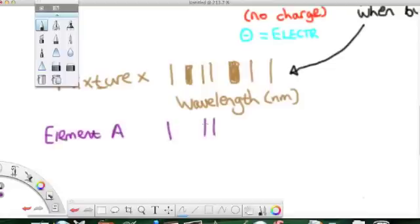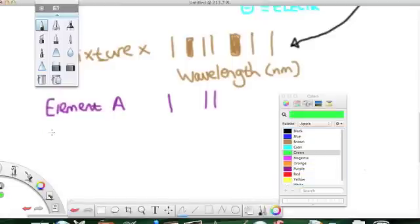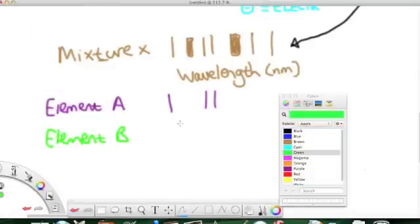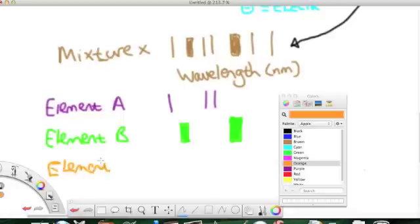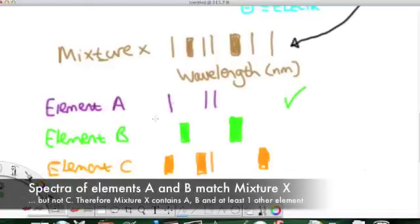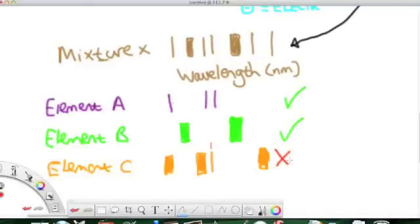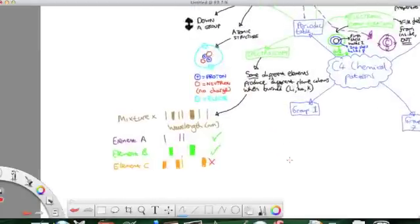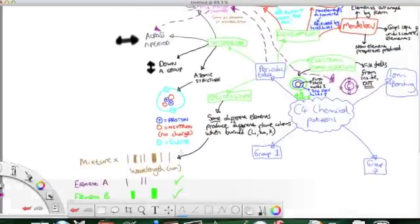So, there we show mixture X, element A, element B, and element C, and we're trying to find out which of those three elements are found in the mixture. We can quite clearly see that element A and element B are found in the mixture, because the lines of the spectra match with mixture X, but element C does not. So, mixture X contains element A and B, and an other mixture.